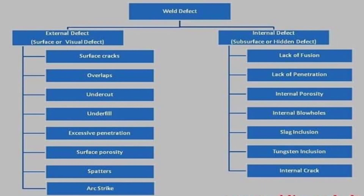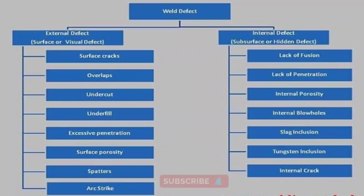Welding defects can be defined as the irregularities formed in the given weld metal due to wrong welding process or incorrect welding patterns. The defect may differ from the desired weld bead shape, size, and intended quality. Welding defects may occur either outside or inside the weld metal. When weld defects form in a weld, they can weaken the joint, and in some cases, this results in complete failure of the weldment.